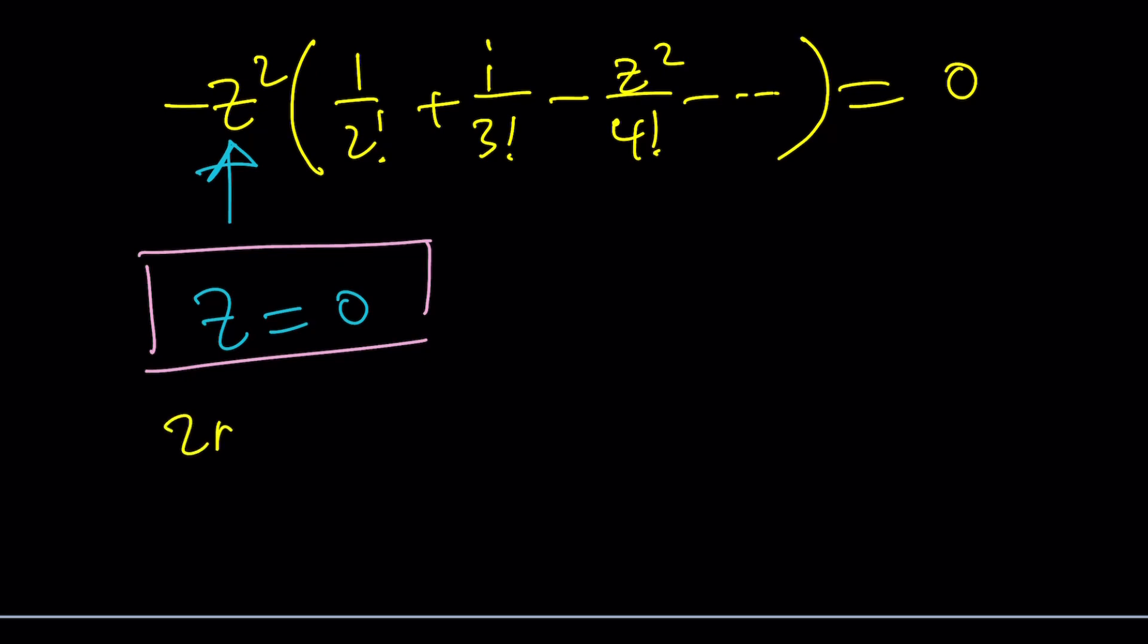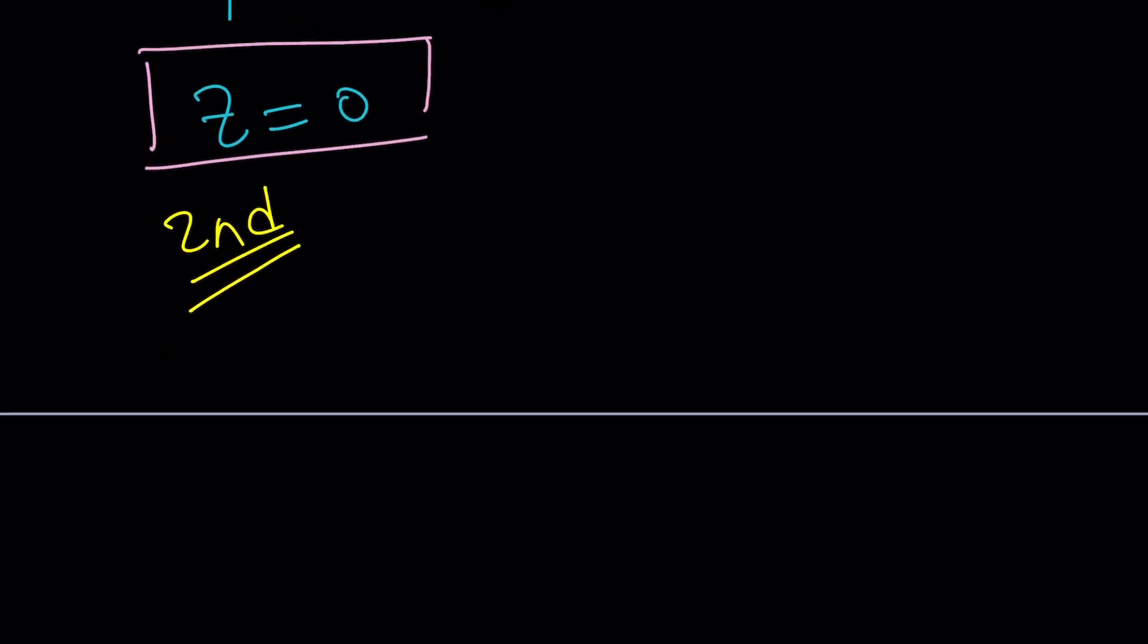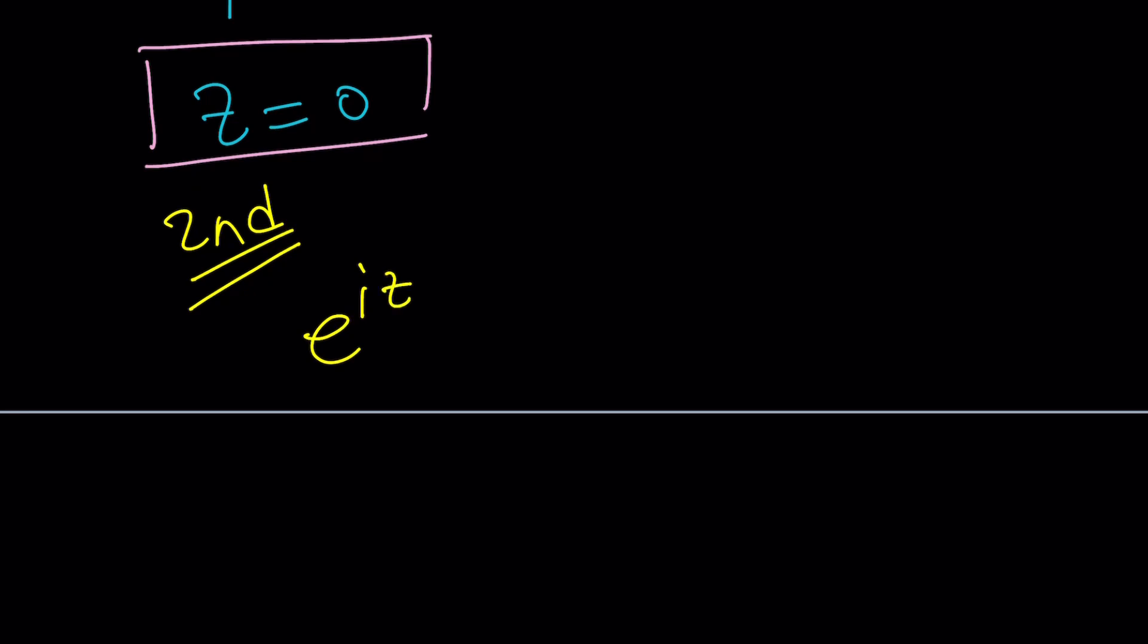The second method actually kind of uses an interesting idea. I'm pretty sure some of you thought about it and you're like oh this is so obvious why don't you do this. We have e to the iz equals 1 plus iz. Obviously at this point you can do the following.